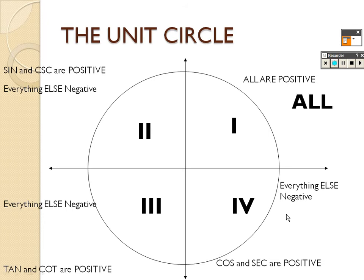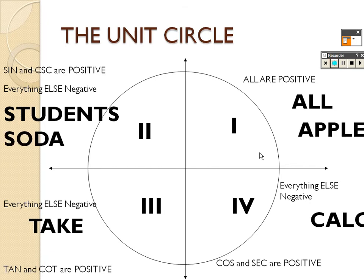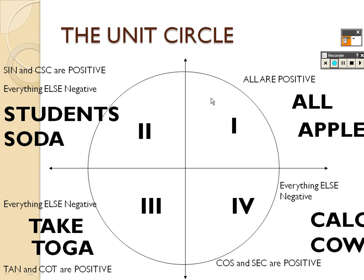To remember this, use the mnemonic 'All Students Take Calculus.' All means everything is positive in quadrant 1. S for Students means Sine and cosecant are positive in quadrant 2. T for Take means Tangent and cotangent are positive in quadrant 3. C for Calculus means Cosine and secant are positive in quadrant 4. Personally, I like 'Apple, Soda, Toga, Cal' — same letters, same idea. It's a mnemonic device to remember which quadrants of the unit circle have positive trig functions.